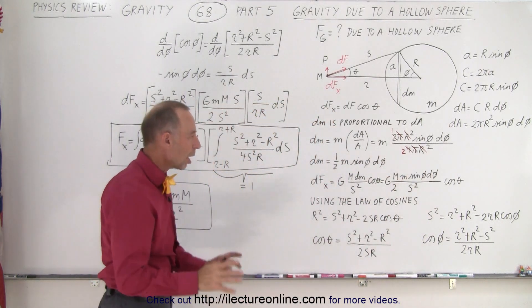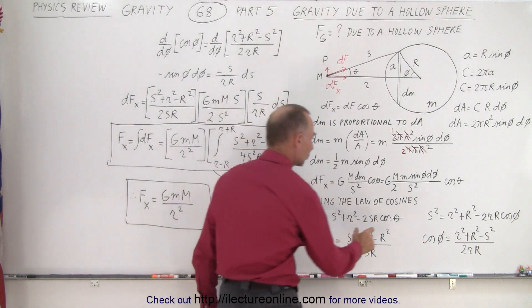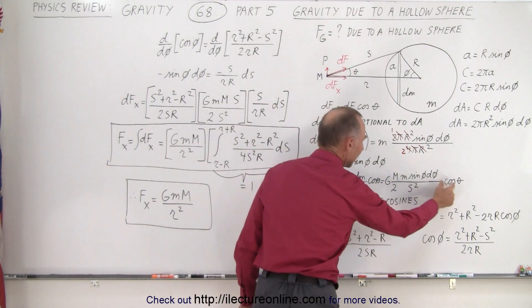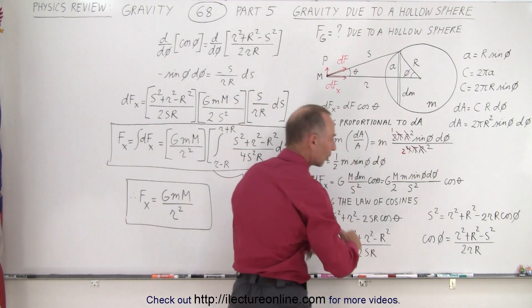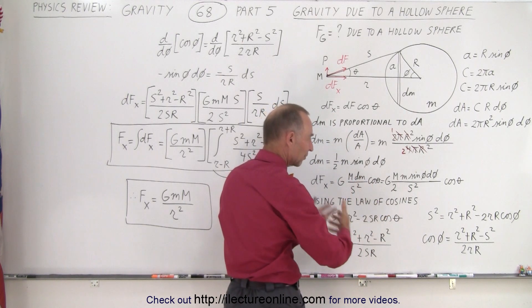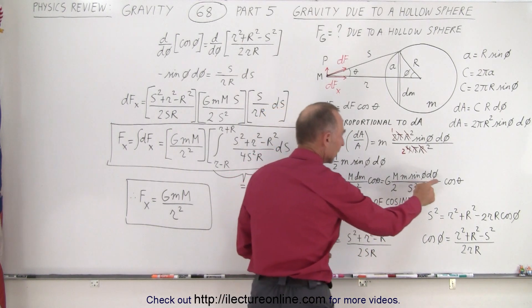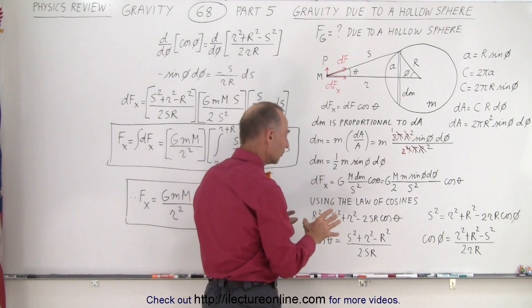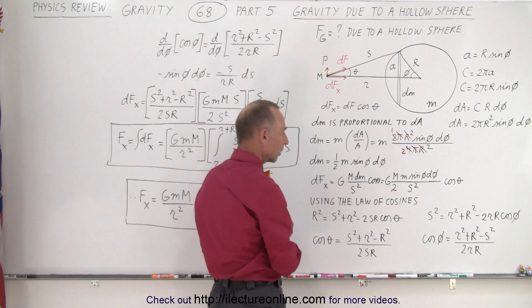Then we use the law of cosines to have an expression for the cosine of theta and the sine of phi, because otherwise we can't solve the problem. So we have to express the cosine of theta and the sine of phi in terms of s, little r, and big R.